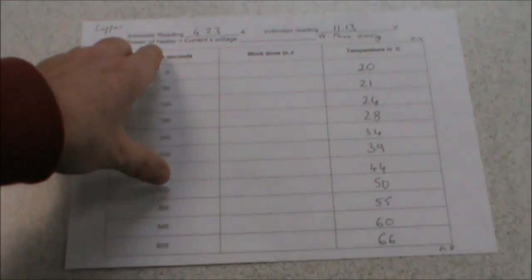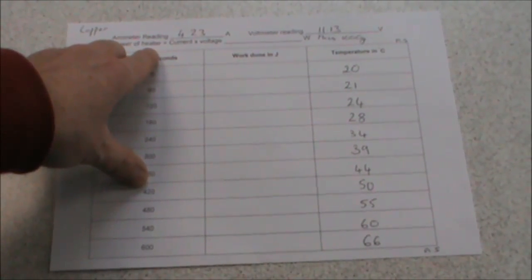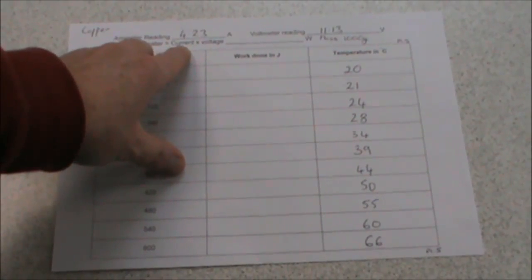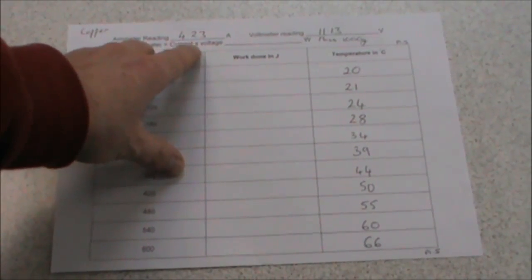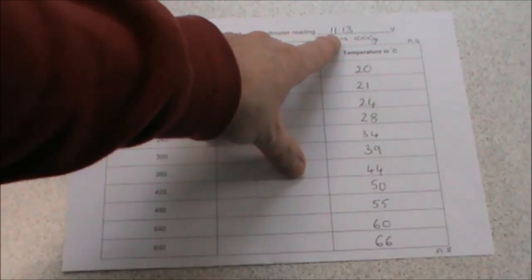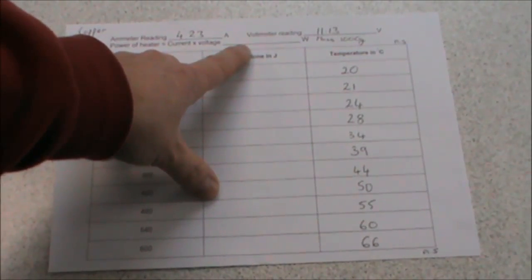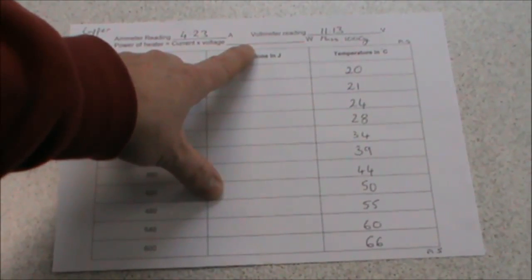The next stage is to calculate the power of the heater. To do this, we multiply the current, 4.23, by the voltage, 11.13, and the answer is recorded on that line there.